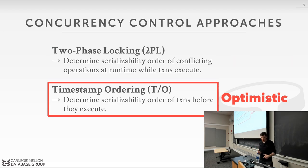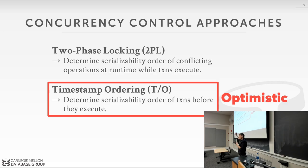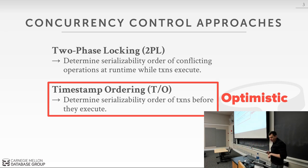Today's class focuses on optimistic protocols, and what's confusing is that the protocols we're discussing are part of a broad class called timestamp ordering protocols — but there's also a specific protocol called the timestamp ordering protocol. Furthermore, there's another protocol specifically called the optimistic concurrency control protocol. Both basic timestamp ordering and optimistic concurrency control are examples of timestamp ordering protocols, and both are optimistic. That is extremely confusing, but we'll clarify as we go.